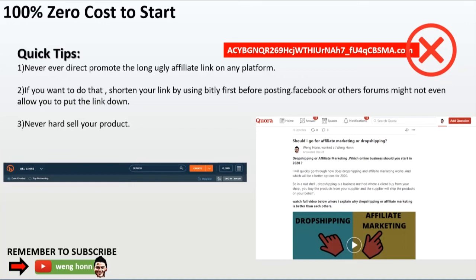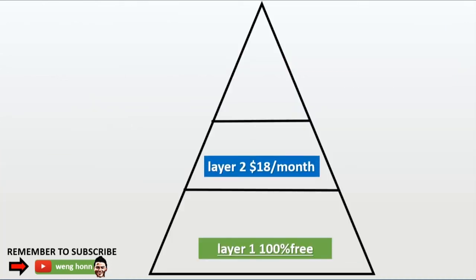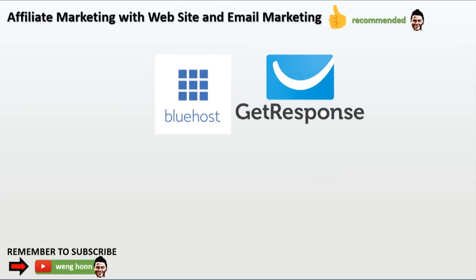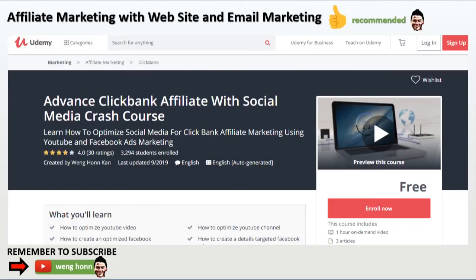The next level requires two things: a website and an email marketing software. I suggest you use Bluehost and also GetResponse as your email marketing system, as both are what I'm using now. I also created a course on how to set things up for your affiliate marketing for free — yes, this course is 100% free, no upsells or anything. Just enroll and get things up and running.